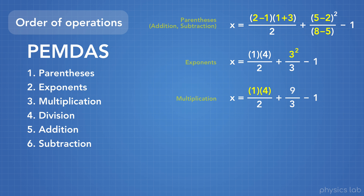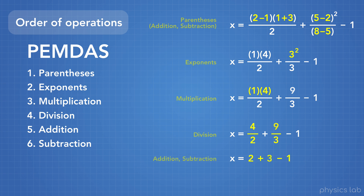Next, we do multiplication. Numbers in parentheses next to each other means multiplication, so 1 times 4 becomes 4. Then we do any division: 4 divided by 2 becomes 2, and 9 divided by 3 becomes 3. Now all that's left is addition and subtraction, which we can do together: 2 plus 3 minus 1 becomes 4. We took that big expression and simplified it down to 4. Anyone who uses the order of operations on the same expression will get the exact same answer.